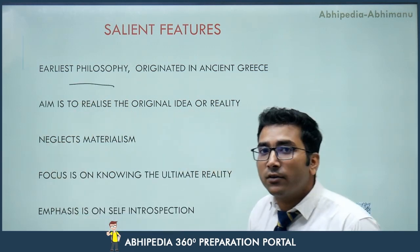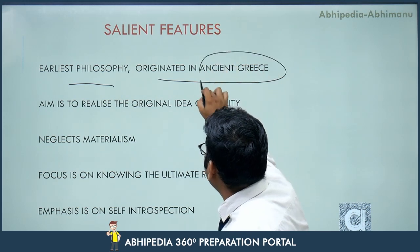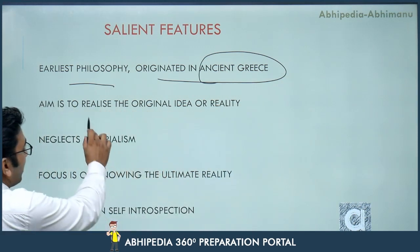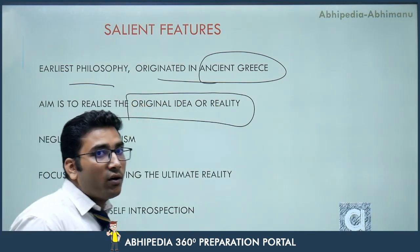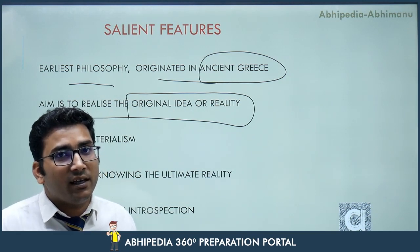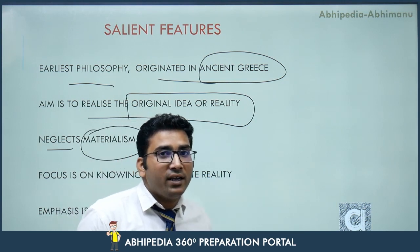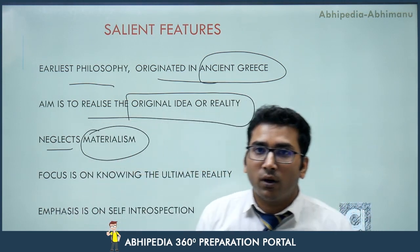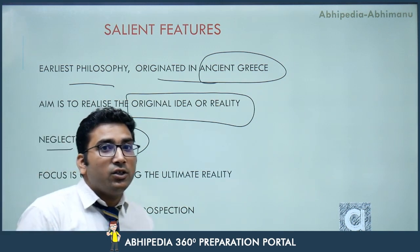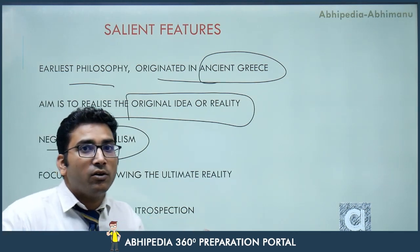This is the earliest philosophy — the first philosophy which evolved in Greece, specifically in Athens, ancient Greece. This was the land from where idealism started its journey. It aims to realize the original idea or the reality of human beings — what is the exact reality for us. Idealism neglects materialism — the material aspects of the world which can be seen and enjoyed, whereas idea cannot be seen and can only be enjoyed when you do introspection within your soul.